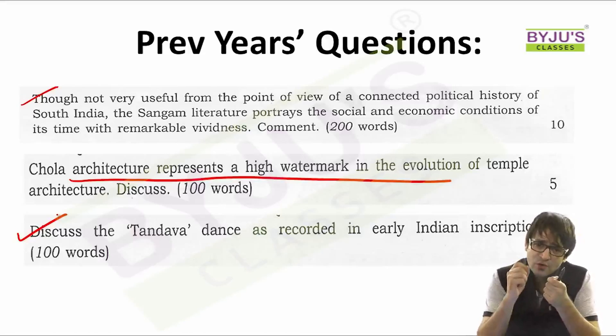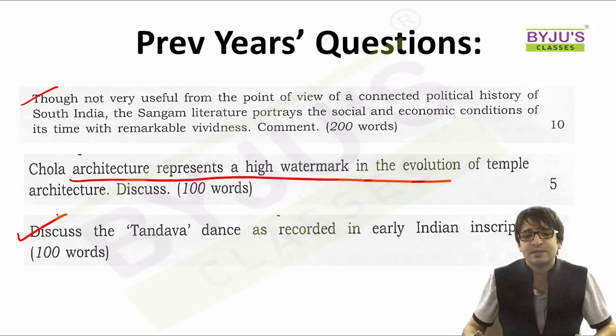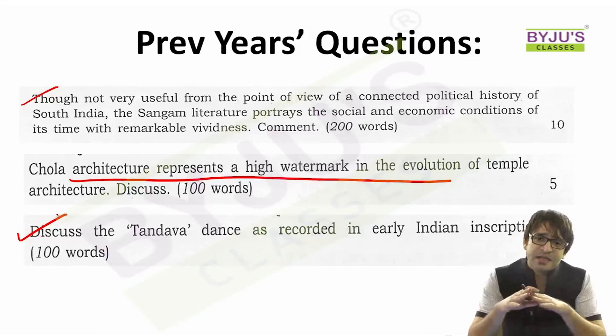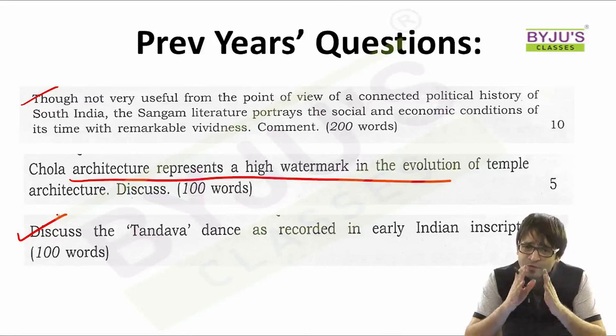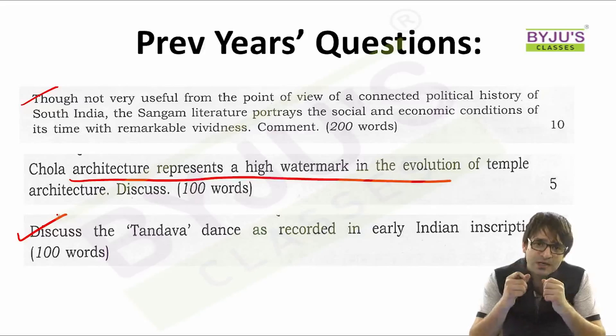Apart from these, you need to focus on the Sufi and Bhakti movements and the influence of Islamic art and architecture on Indian society. To sum it up, pick one book, read between the lines, and this area won't appear difficult. If this area appears difficult for you, it is difficult for every other aspirant too. So instead of wasting your time reading too many sources and books, read one important source and practice your answer writing — that will give you an edge over other aspirants.